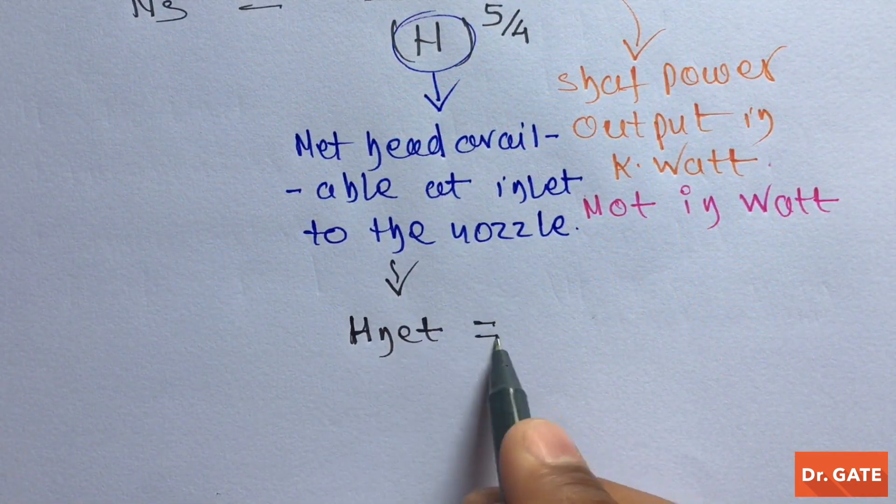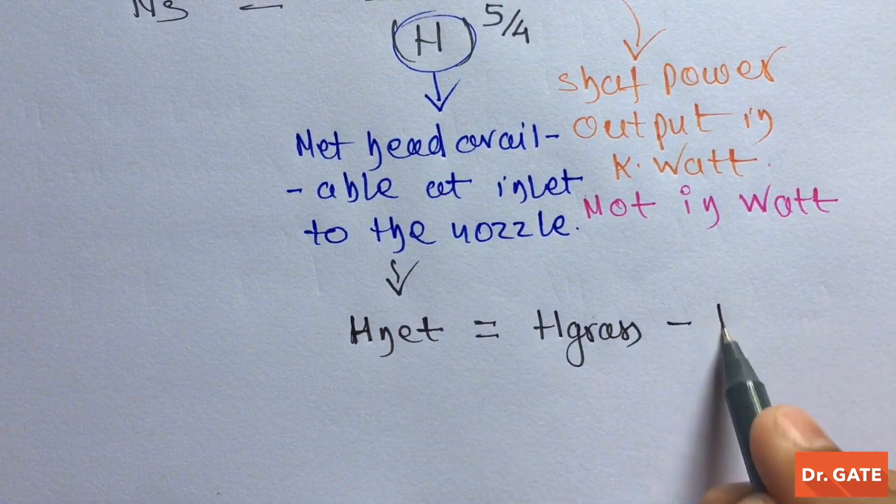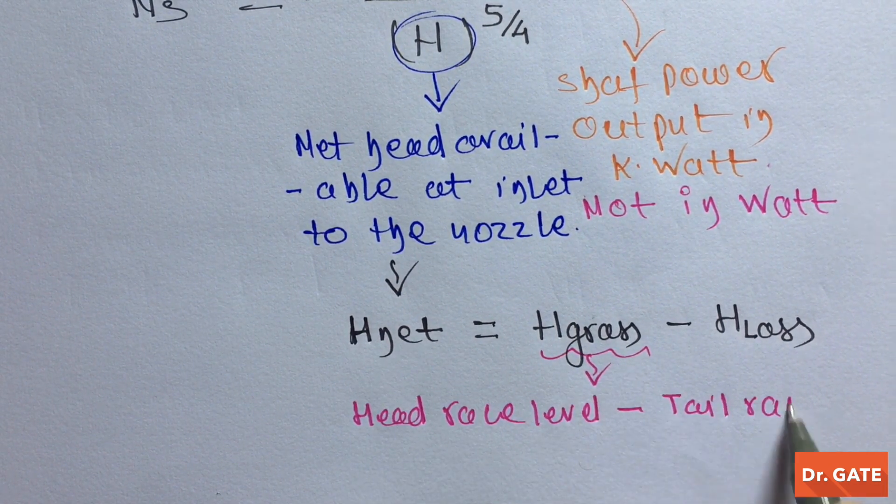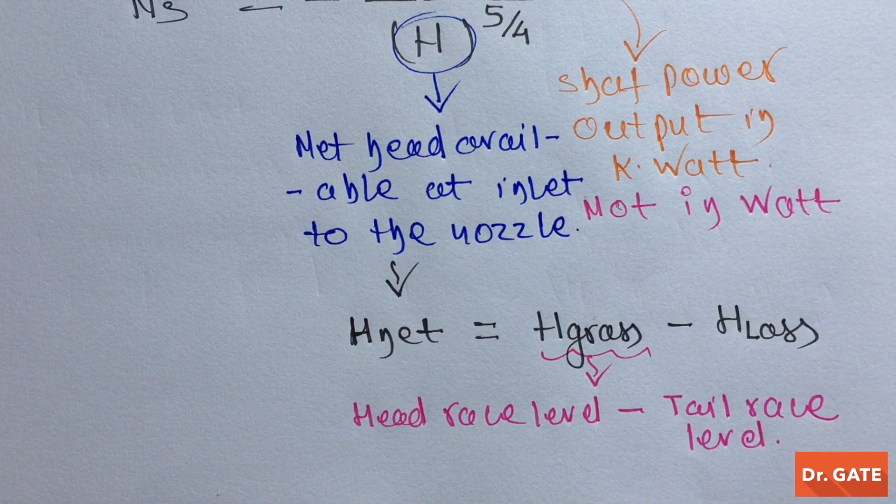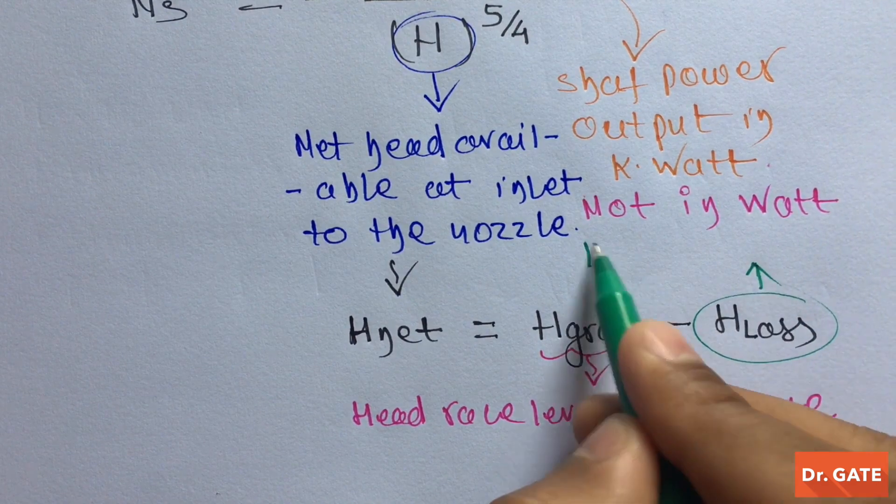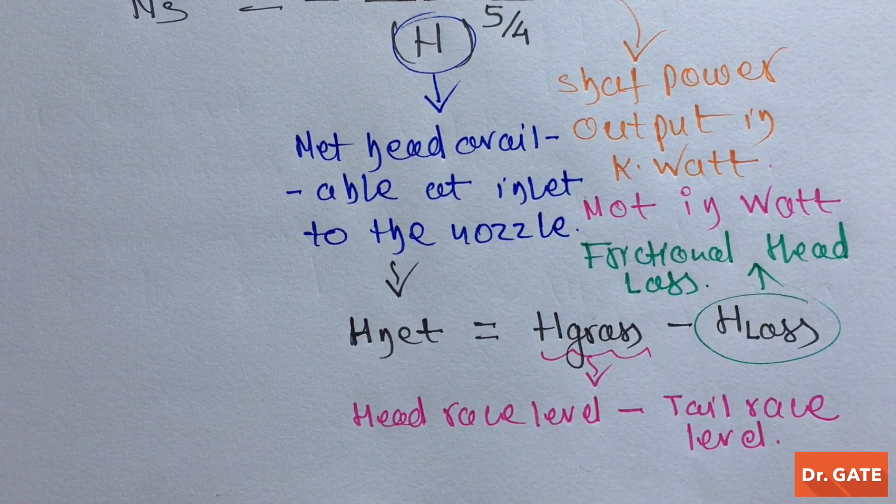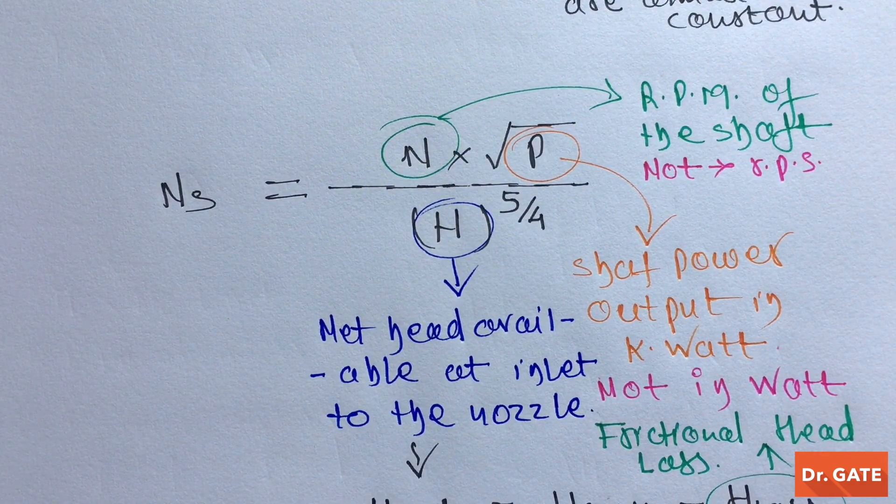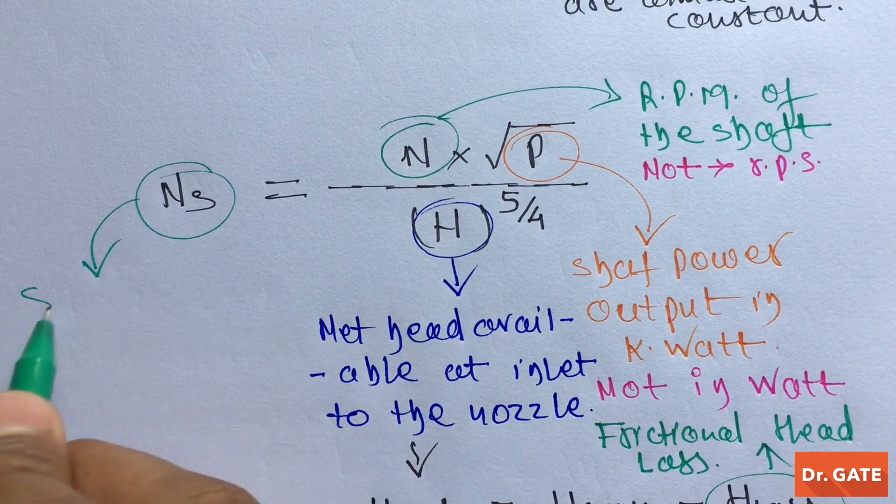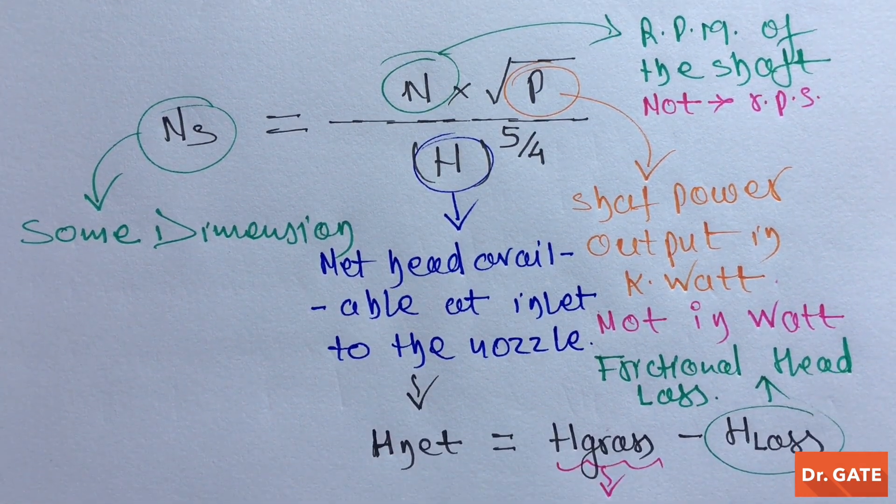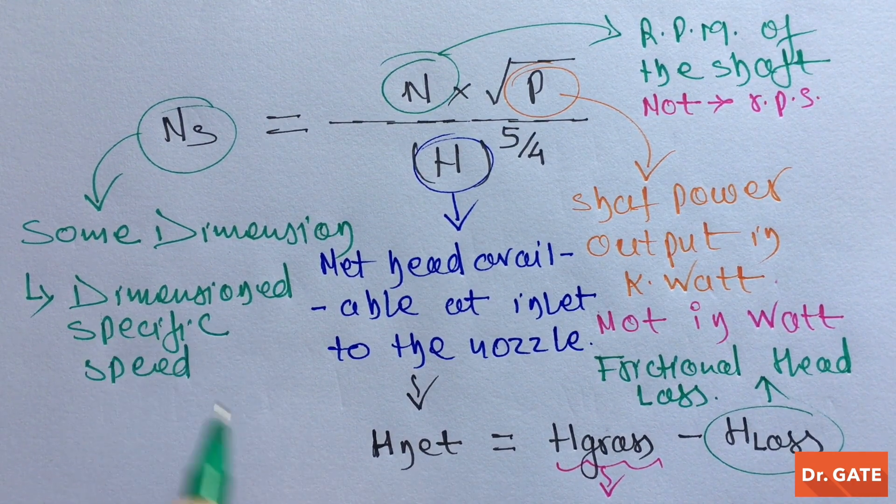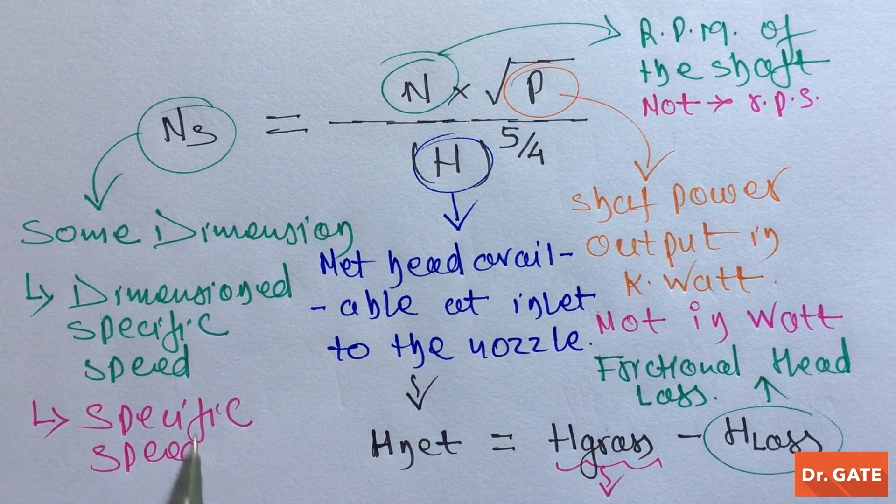And this is the net head available at the inlet to the nozzle. Mathematically, it is equal to gross head minus head loss. Where gross head is head race level minus tail race level. Since head loss is mainly because of the friction, so you can take it as frictional head loss. Now, if you do dimension analysis of this equation, you will find that this term has some dimension. That's why this term is known as dimension specific speed or simply just specific speed.